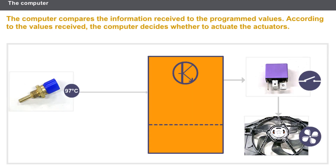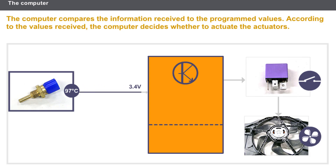We will look at the operation of a computer by taking the example of centralised coolant temperature management. The coolant temperature sensor converts the temperature signal into an electrical value. The computer receives this electrical value and converts it back into a temperature.